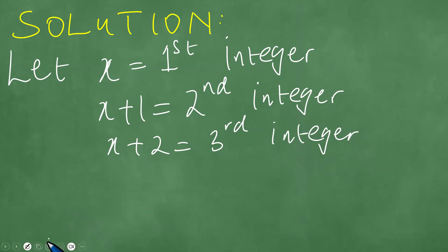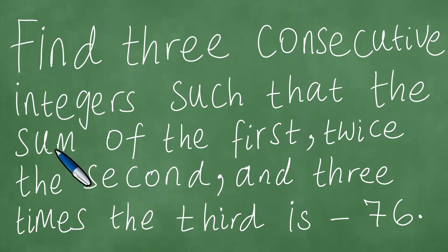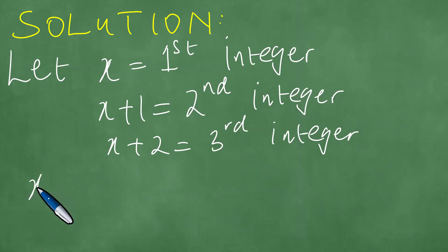We add these now. This question says we need to find the sum such that the sum of the first plus twice the second, so it's twice x plus one, and three times the third, which is x plus two, equals minus 76.